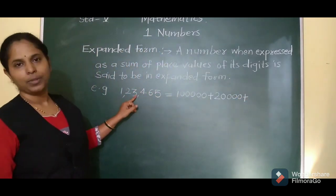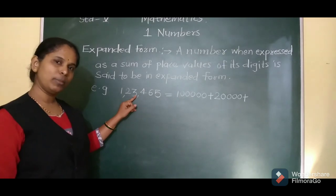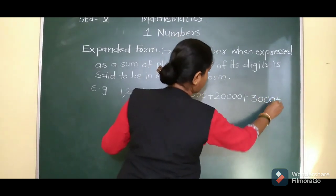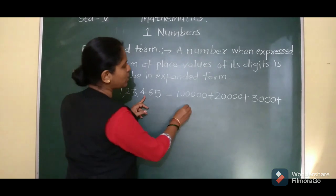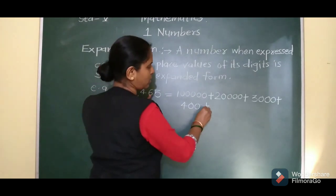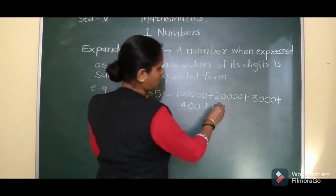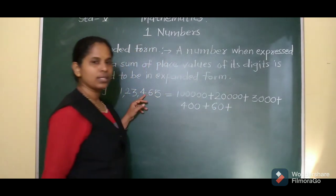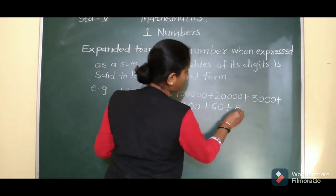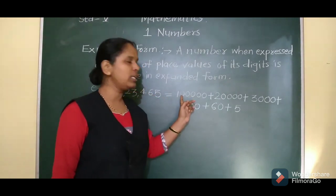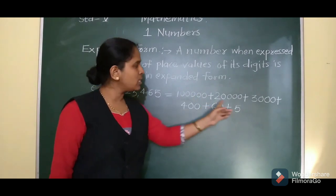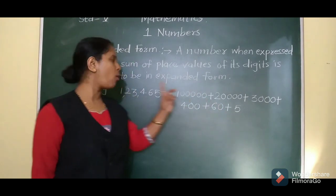Plus 3 — 3 is at the 1,000th place, so the place value of 3 is 3,000. Next digit 4 is at 100's place, so 4 into 100 is 400. Plus 6 — 6 is at 10's place, so 6 into 10 is 60. Plus 5 — 5 is at 1's place, so the place value of 5 is 5. Now I have written the place values of each digit in the form of addition. This is called the expanded form of the given number.